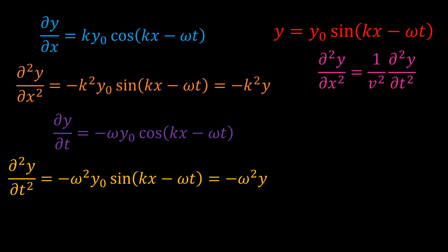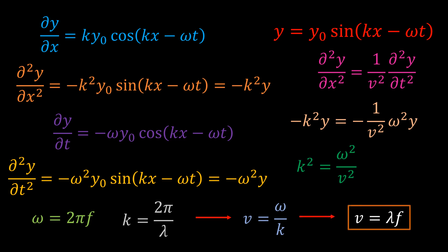Putting these into the wave equation yields this. Simplifying a bit yields this. By taking the square root of both sides of the equation yields this. But we know that omega is equal to 2 pi times frequency, and that k, the wave number, is equal to 2 pi over the wavelength. Subbing this in the velocity expression yields v equal to lambda f, the normal wave velocity relation.